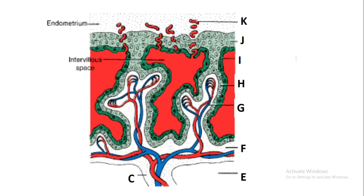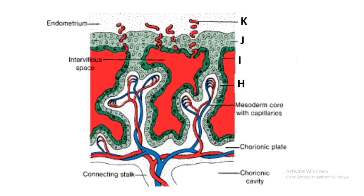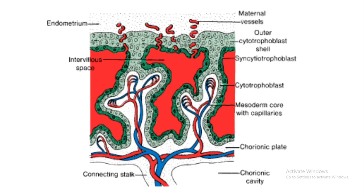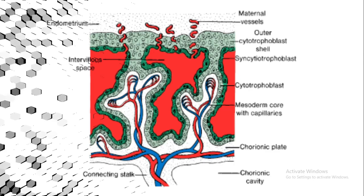A is simply the endometrium of the uterus. B is the intervillous space which has a lot of blood vessels. C is the connective stalk, which is the future umbilical cord. E is the chorionic cavity. F is the chorionic plate. G is the mesoderm core with capillaries. H is the cytotrophoblast. I is the syncytiotrophoblast. J is the outer cytotrophoblastic shell. K is the maternal blood vessels, known as the sinusoids.